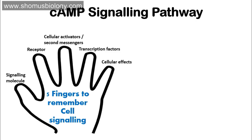When thinking about the cAMP pathway, immediately recall the cellular effect: it is simply allowing cells to grow and divide — cellular growth and cell division. Applying the five finger concept, the signaling molecule for cyclic AMP signaling is generally a hormone; one example is adrenaline. The receptor is simply the adrenaline receptor, also known as a GPCR — a G protein-coupled receptor — which is a type of seven-transmembrane receptor.